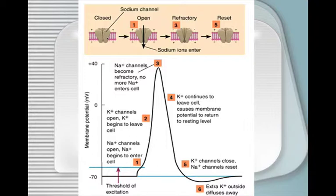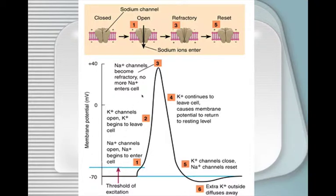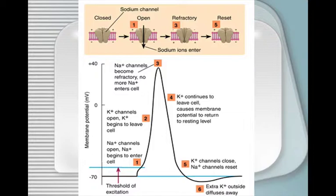Sodium ion channels are closed during resting potential, open for the action potential, and then closed again during the refractory and reset periods. Summarizing the ion flows: once you reach the threshold of excitation, sodium channels open and sodium enters the cell. Then potassium channels open and potassium begins to leave. Once at the peak, sodium channels become refractory — no more sodium enters. Potassium continues to leave, causing the membrane potential to return to resting level. Then potassium channels close, sodium channels reset, extra potassium diffuses away, and the overshoot is rectified.